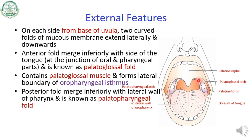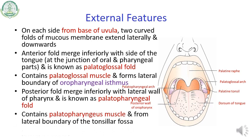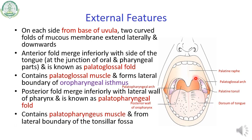The posterior fold merges inferiorly with the lateral wall of the pharynx and is known as the palatopharyngeal fold. It contains the palatopharyngeal muscle and also forms the lateral boundary of the tonsillar fossa. You can see there is a tonsillar fossa here.